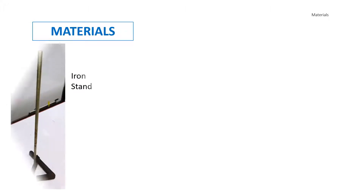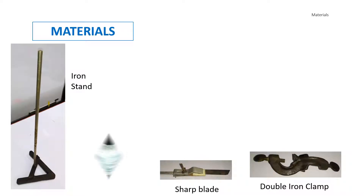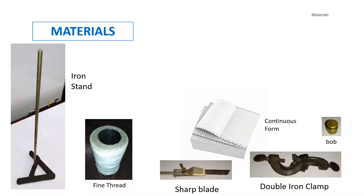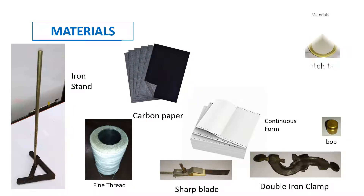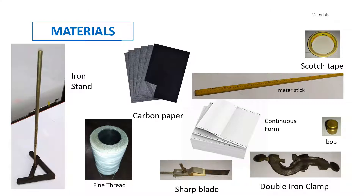To attain these objectives, the following materials will be used: iron stand, double iron clamp, sharp blade, fine thread, bob, continuous form or band paper, carbon paper, scotch tape, and meter stick.